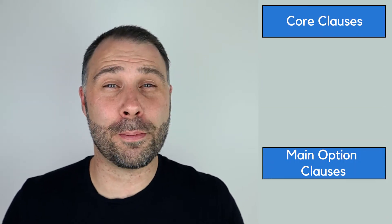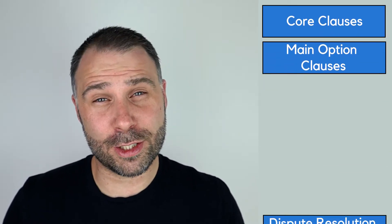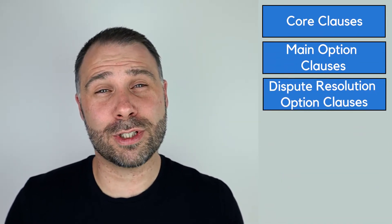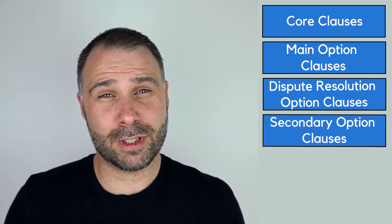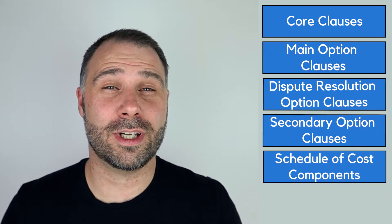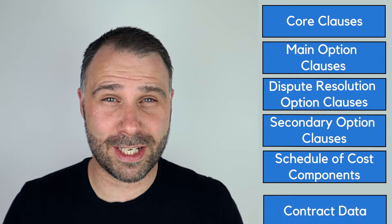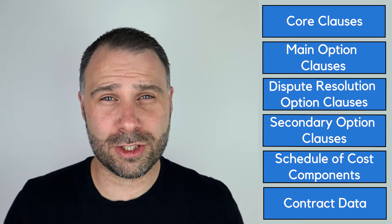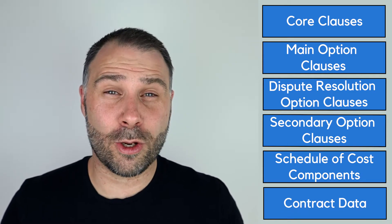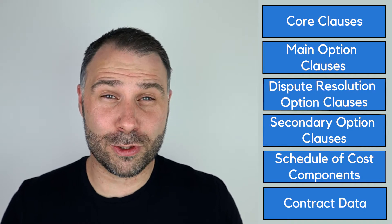The engineering and construction contract has six main sections. These are the core clauses, the main option clauses, the dispute resolution clauses, the secondary option clauses, the schedule of cost components, and the contract data. We're going to go through each of these sections in more detail, starting with the core clauses.